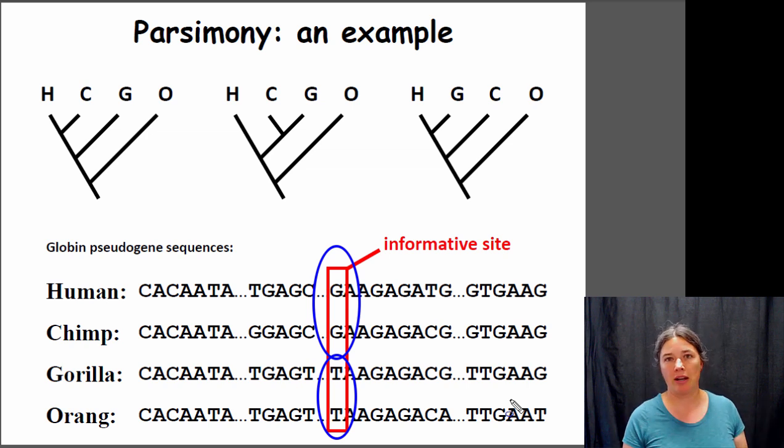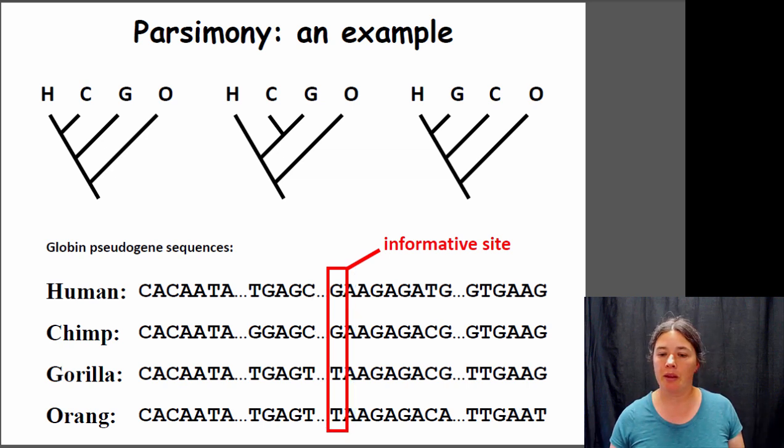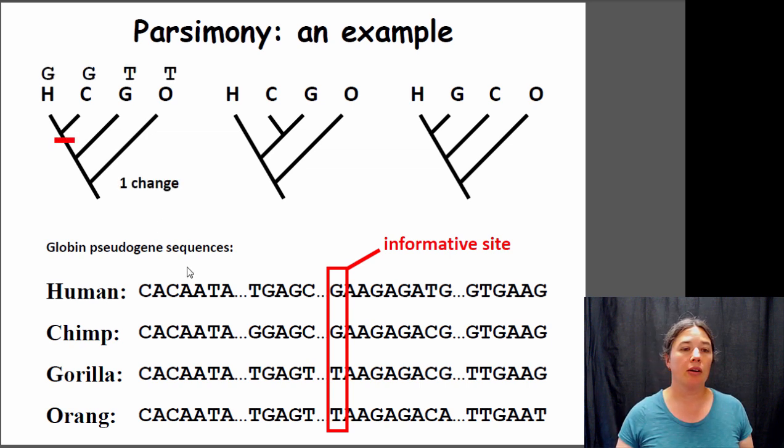Now let's map this trait onto each of the trees. Assuming that the tree is true, where on the tree would this trait evolve? Let's take a look at this. In the first tree here, you can have it evolve right here, and so humans and chimpanzees have the shared derived trait and the gorillas and orangutans both have the ancestral trait. It just requires one evolutionary change.